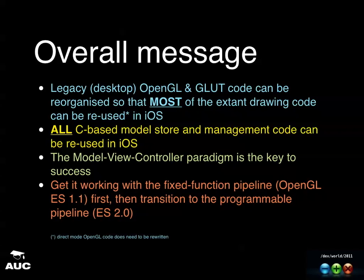If you're prepared to use the fixed function pipeline — just to crystallize that for you — OpenGL ES 1.1 is a fixed function pipeline. You don't have to think about how you draw geometry or how you shade pixels on the screen. All you have to think about is geometry, what color material your geometry is made of, and if you like, what lights you're going to light it with. If you go to OpenGL ES 2, you need to start writing shaders, and shaders are the things that turn geometry into pixels on the screen. I'm not going to talk about that today at all.